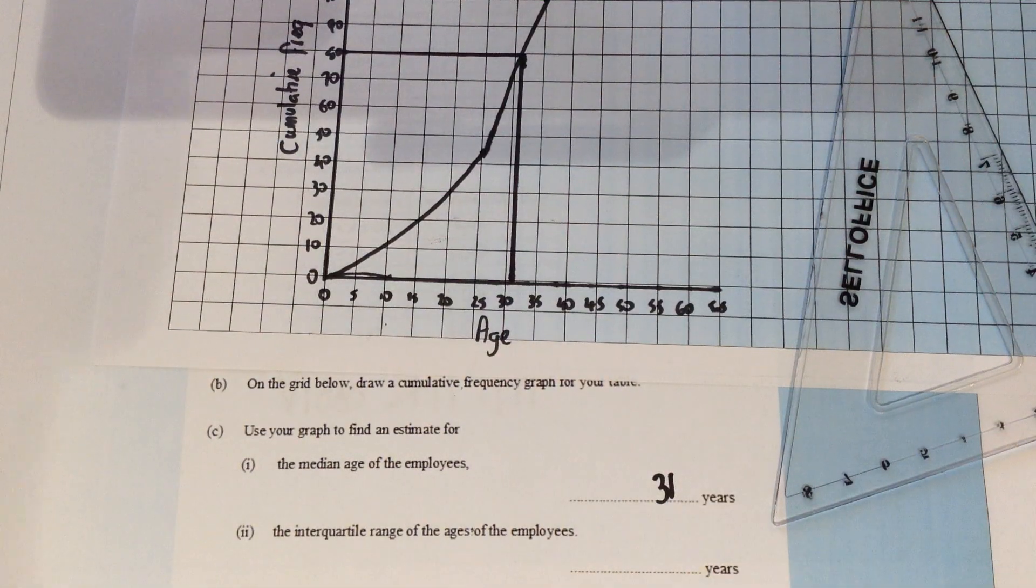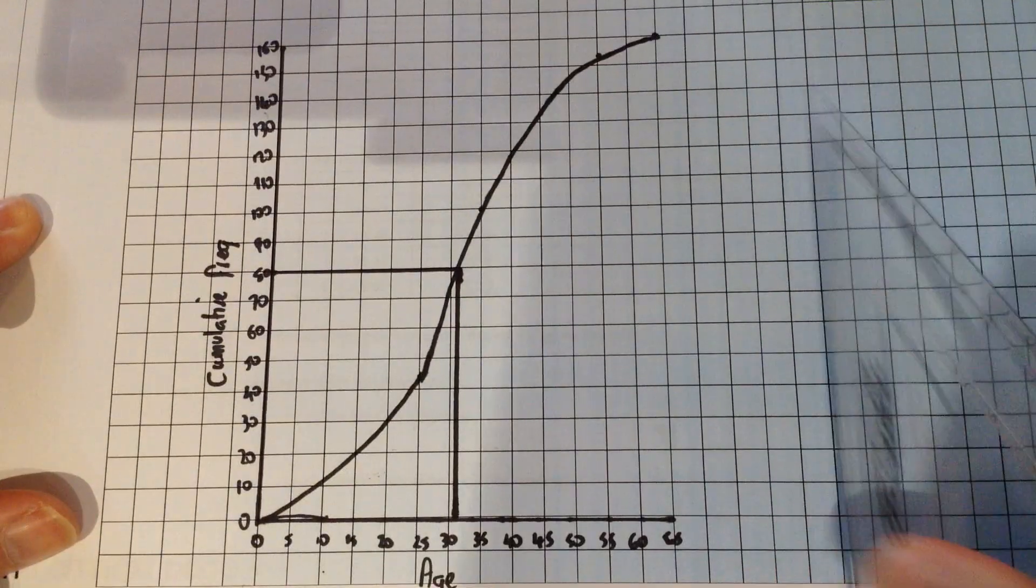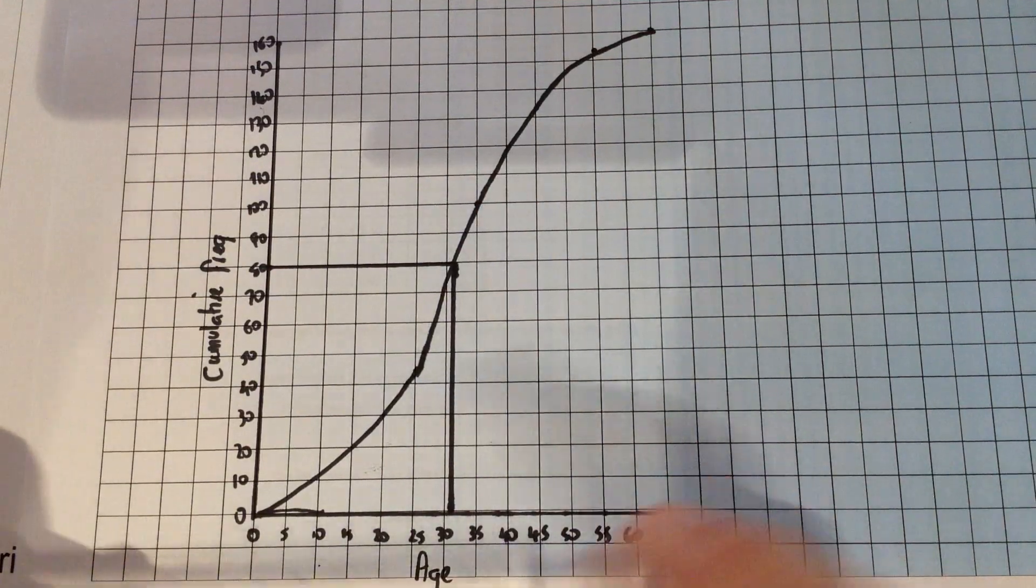The second part of the question has asked us to do the interquartile range. So back to the graph. The interquartile range is the difference between the upper quartile and the lower quartile. Let's do the lower quartile first.